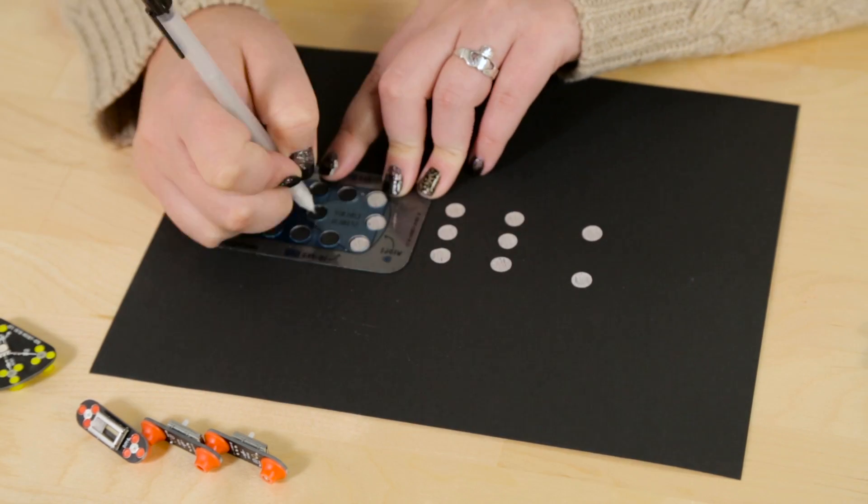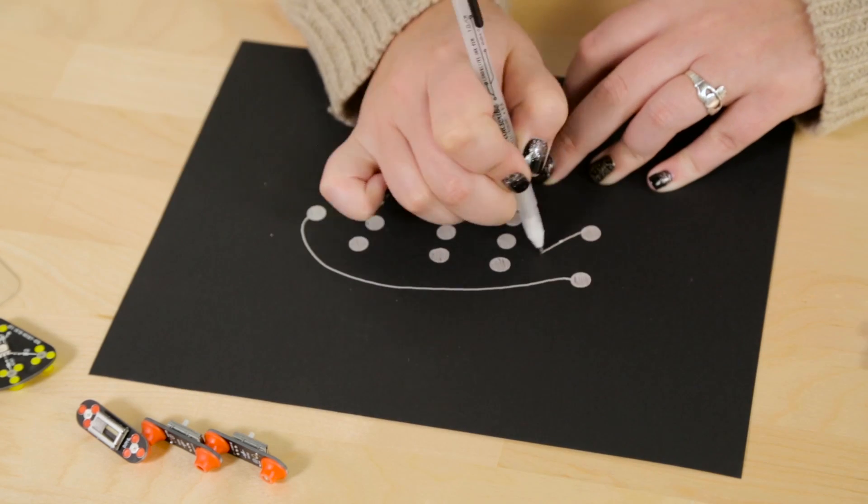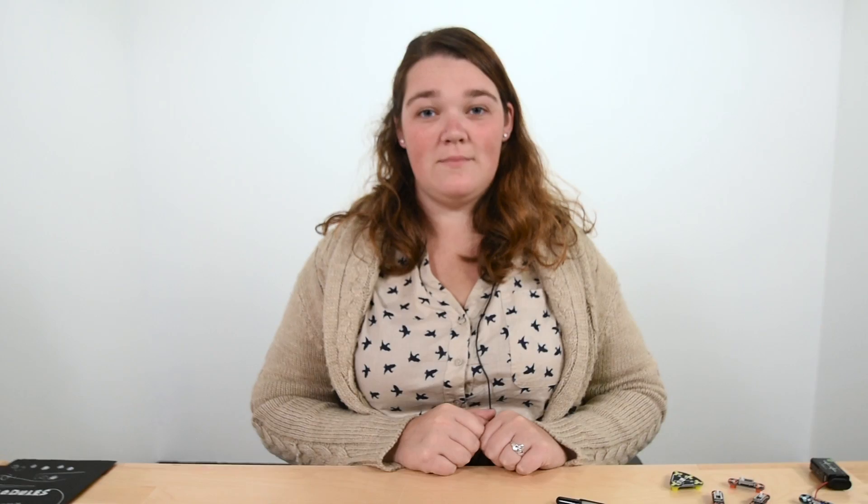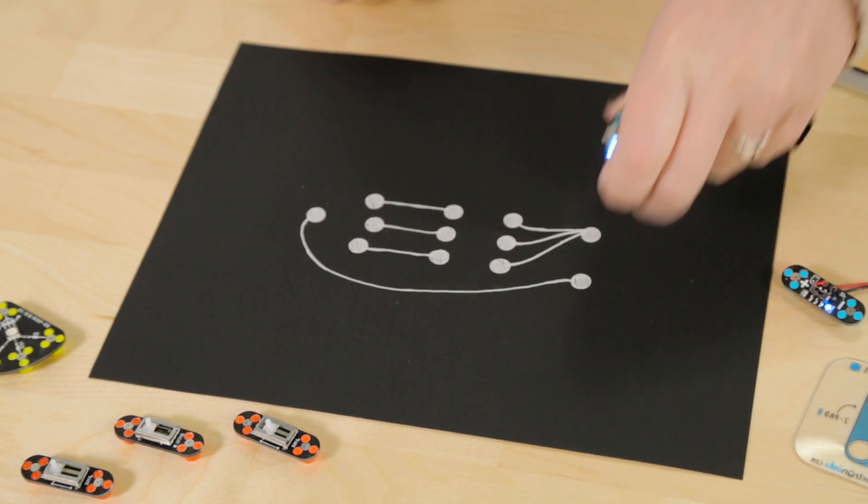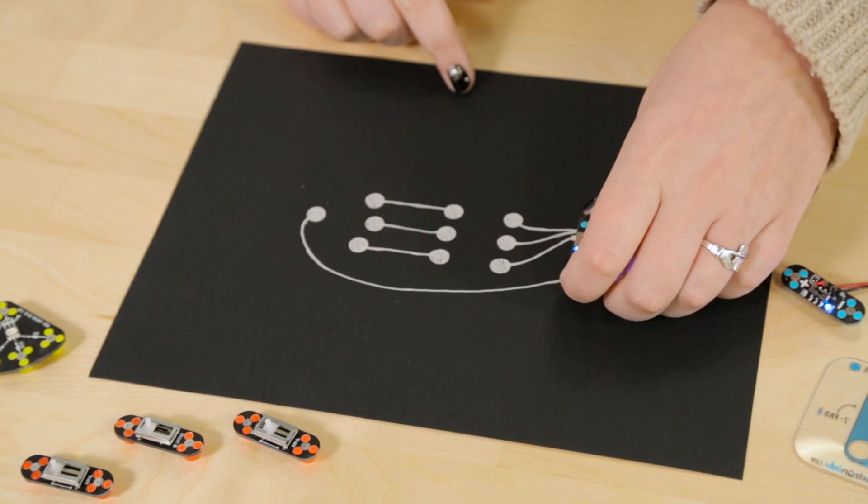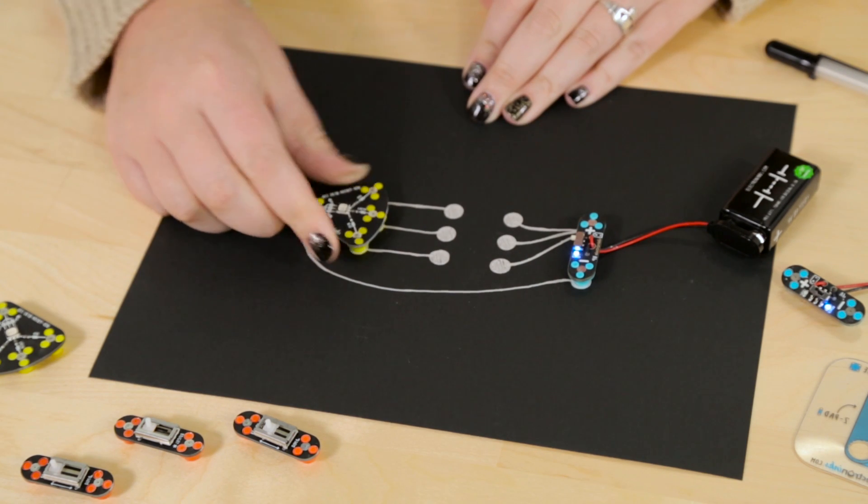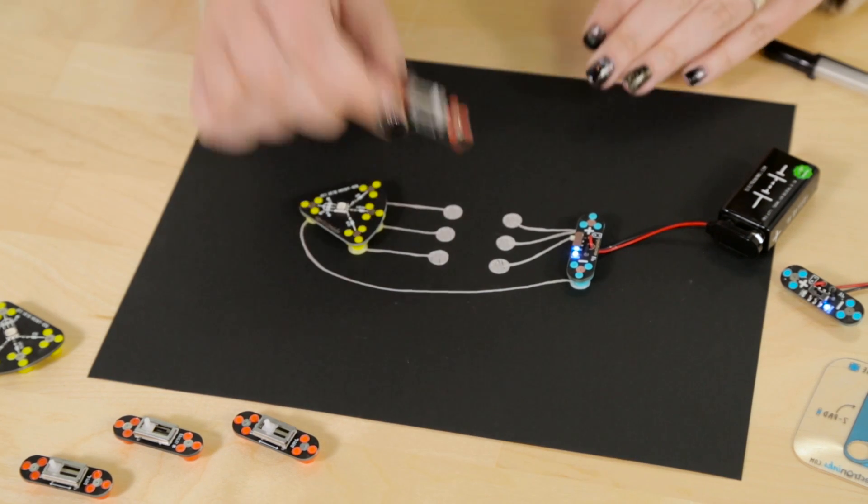Each slider module is going to correspond to a different color on the LED module. So, I'll have a red slider, a green slider, and a blue slider. All right, now it's time to put my modules in place. Take my power, take my LED, my RGB LED, and then take my sliders.